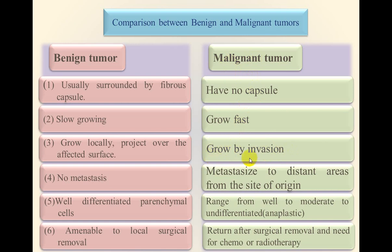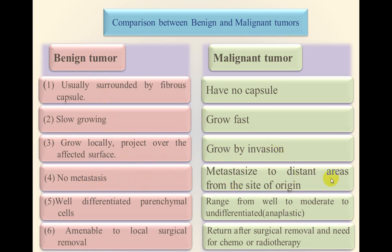Malignant neoplasms may consist of two portions: some projecting over the affected surface and others invading the underlying normal tissue. Benign neoplasms do not metastasize — never. Metastasis occurs only in malignant tumors. Metastasis means breakout of some malignant tumor cells from the original mass, entering the circulation either via blood or lymphatics, and reaching another site in the body to form a secondary tumor.